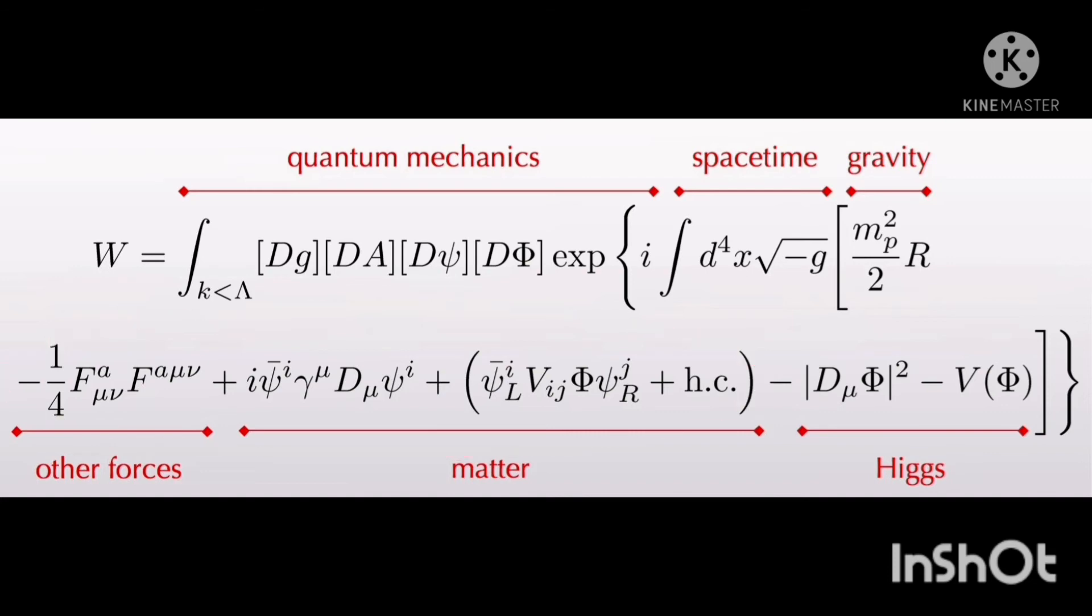When it comes to phi lambda minus 1 divided by 4, F to the A mu nu, F to the A mu nu plus I psi to the I gamma to the UD mu psi to the I plus psi to the I LV IJ.